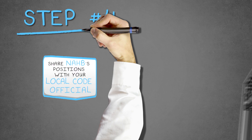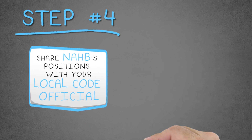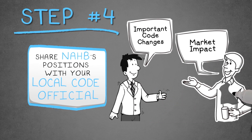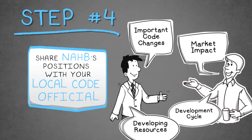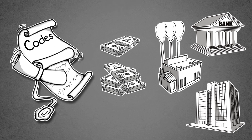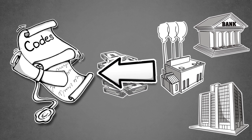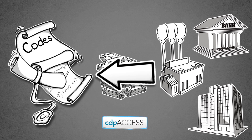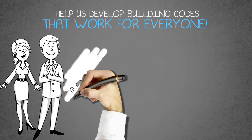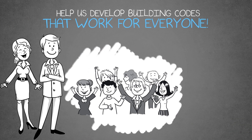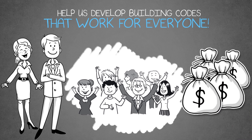Step 4: Share NEHB's positions with your local code official. Over the course of the ICC code development cycle, NEHB will be developing resources that identify the most significant code changes and the impact these changes will have on the housing market. As more industries and organizations attempt to use the building codes process to either increase the use of their products or to circumvent the federal regulatory process, it's imperative that we encourage more local code officials to participate in CDP Access. It's only through your efforts that we'll be successful in refocusing people like Jim on the importance of balancing codes and the cost associated with complying with them.